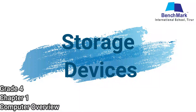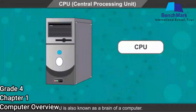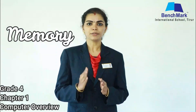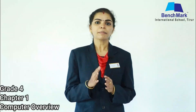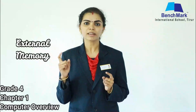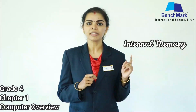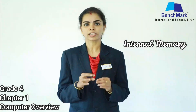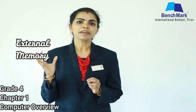In the CPU, that is the central processing unit — which is also called the brain of the computer — we have memory. This memory is used to store the work that we do. This memory is of two types: one is internal memory and the other is external memory. The internal memory is a temporary one, that is it does not stay for a long time, whereas the external memory is a permanent one.